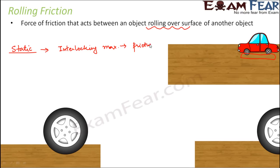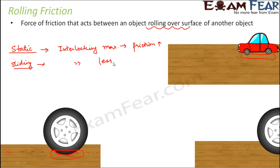In the case of sliding, as the object changes its position from one place to another, the area of contact - the part of the wheel in touch with the floor - is not remaining in touch for a longer period because it is changing position. Therefore interlocking is less, and therefore friction is also less.